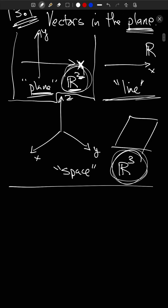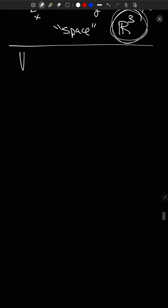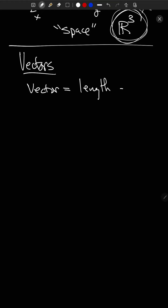That was purely terminology, no math content. Now let's see vectors. So what is a vector? A vector is two things: length and direction. If you have these two bits of information, then you have a vector. And a vector is no more than these two bits of information.